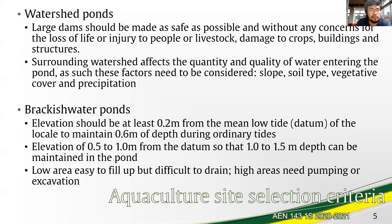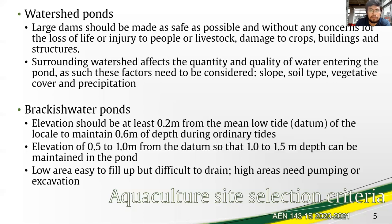The dams of watershed ponds should also be as safe as possible, with the least risk to life and property. Factors to be considered in water quantity and quality of the stream water are slope, soil type, vegetation, and precipitation. For brackish water ponds, elevation should be at least 0.2 meters from the mean low tide level to maintain 0.6 meters of depth during ordinary tides. And if you want to maintain 1.0 to 1.2 meters depth, that elevation should be 0.5 to 1 meter.